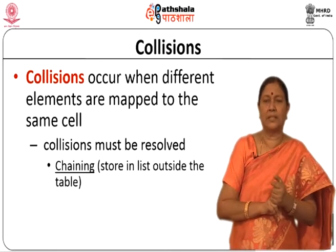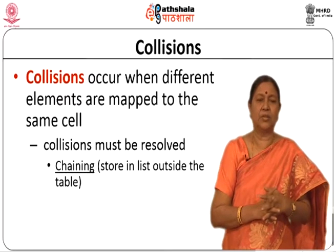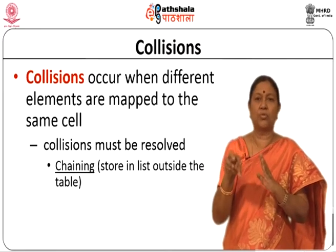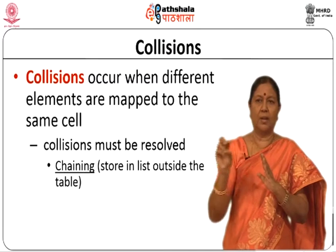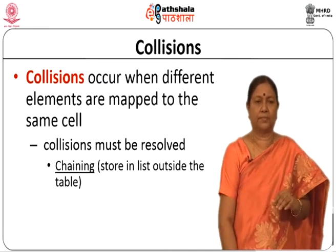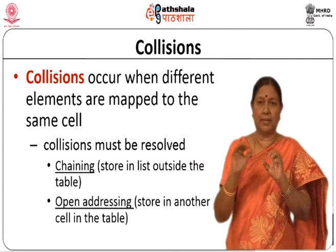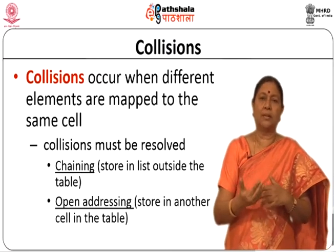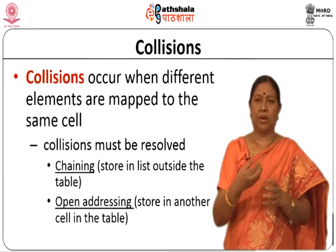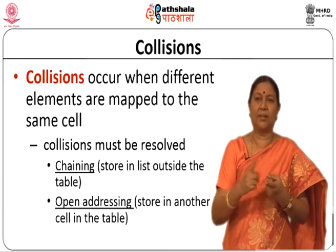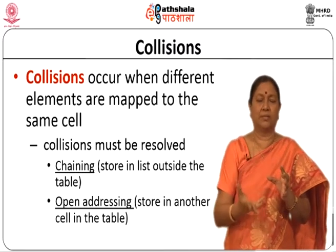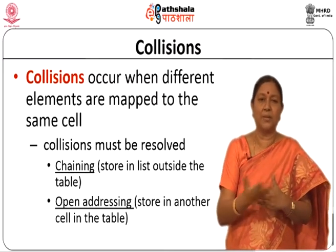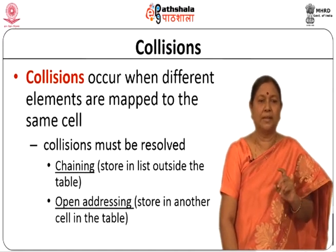There are two methods in which collisions are resolved. Chaining stores a list in the table — when you go to the same location, instead of storing the key value directly, you put a small linked list there and store the values. That list will be outside the table, pointing to it. Another method is open addressing, where you store the collided value into some other location — not the hashed location, but some other location — and you have to do this in a systematic manner, otherwise you cannot find the key.